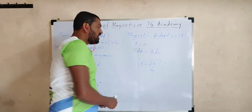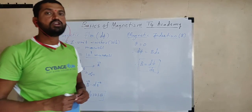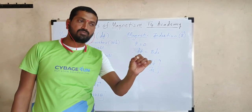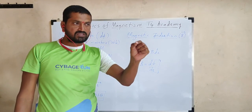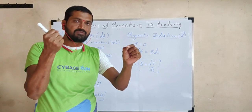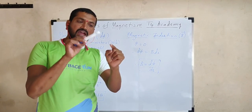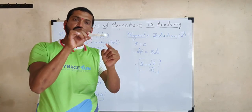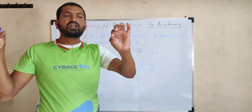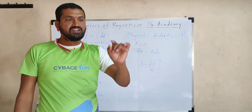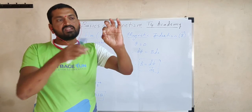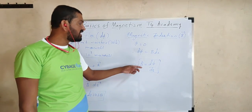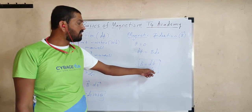From B equals dΦ divided by dS, this is nothing but an indirect definition for magnetic induction. Magnetic induction is a vector quantity, introduced to describe the strength of the magnetic field at a given point. Magnetic induction at a given point is defined as magnetic flux per unit area. If we construct a 1 meter square area around that point, the total number of magnetic lines of force passing normally through that unit area is magnetic induction. Simply, magnetic induction is the ratio of magnetic flux to the given area.